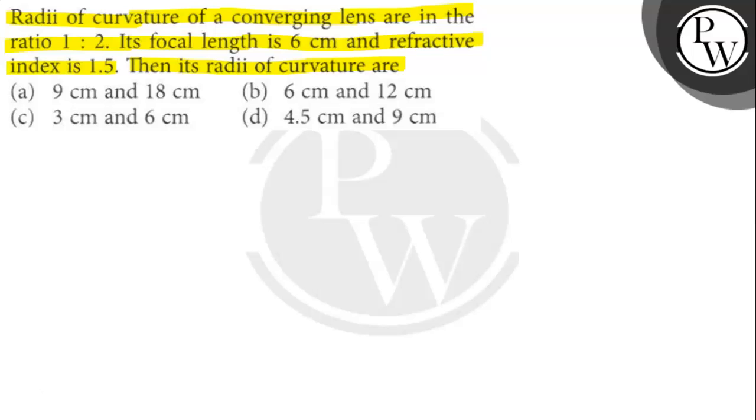So the ratio of radius, focal length, and refractive index is given. From the ratio of radii, consider the values of the radius. Then apply the lens maker formula and we will replace the variables with the values that are given and the values we have considered.